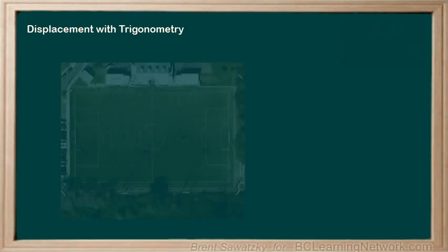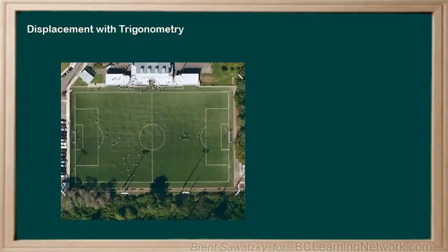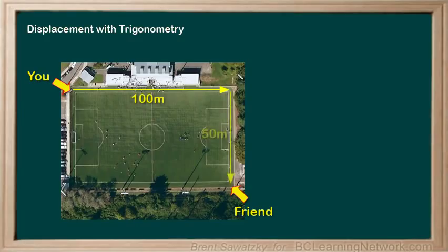For our first example, let's go back to our soccer field situation. The question is: to say hi to a friend on the opposite corner of a soccer field, you walked 100 meters east, then 50 meters south. What was your resulting displacement? In this case, we need to determine both the magnitude and the direction ourselves.